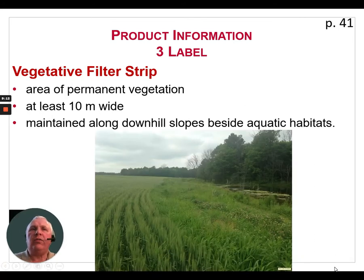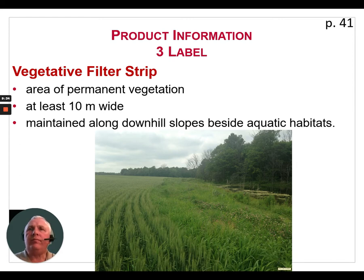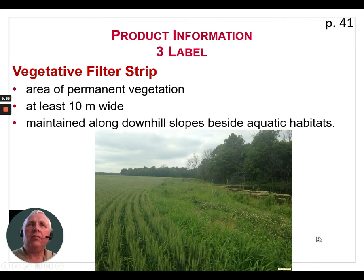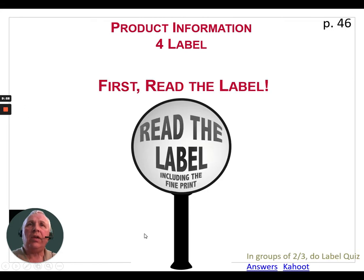The vegetative filter strip is newer terminology now appearing on some pesticide labels. It's an area of permanent vegetation at least 10 meters wide, maintained along a downhill slope beside aquatic habitats. In the example shown in the slide, the pond is to the right, then there is 10 meters of permanent vegetation, and the wheat field is to the left. As always, read the label including the fine print — that will always keep you out of trouble.